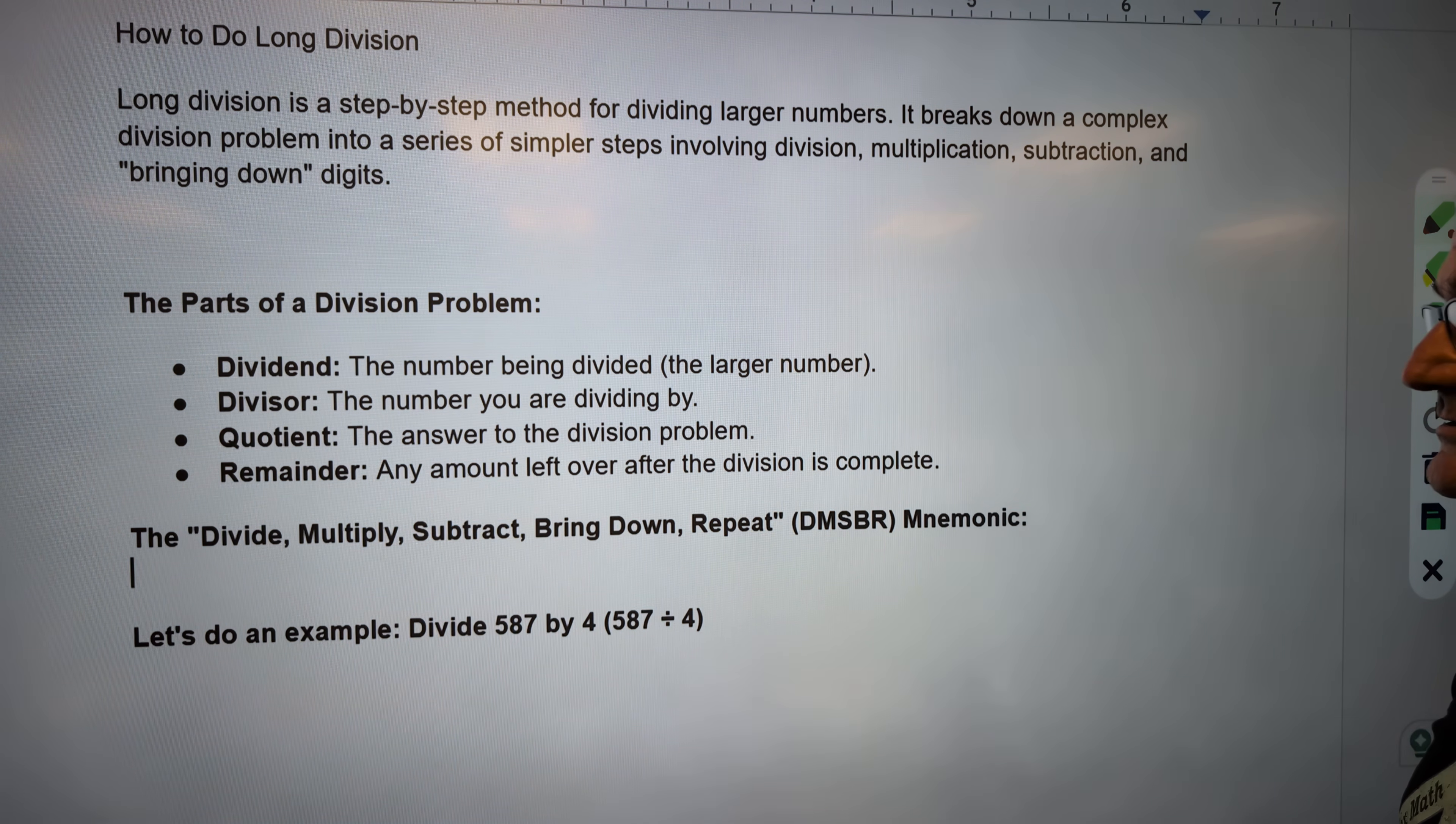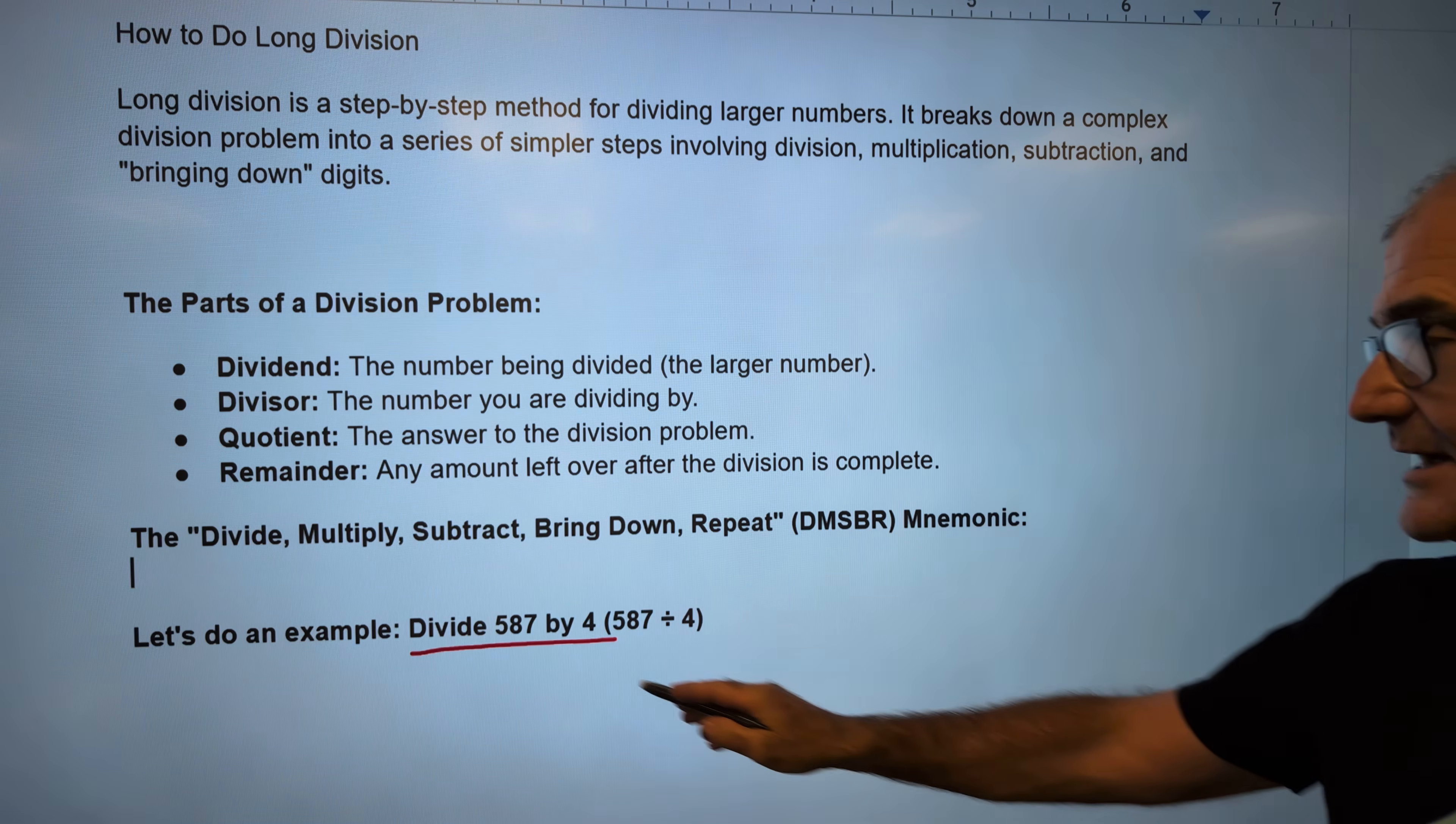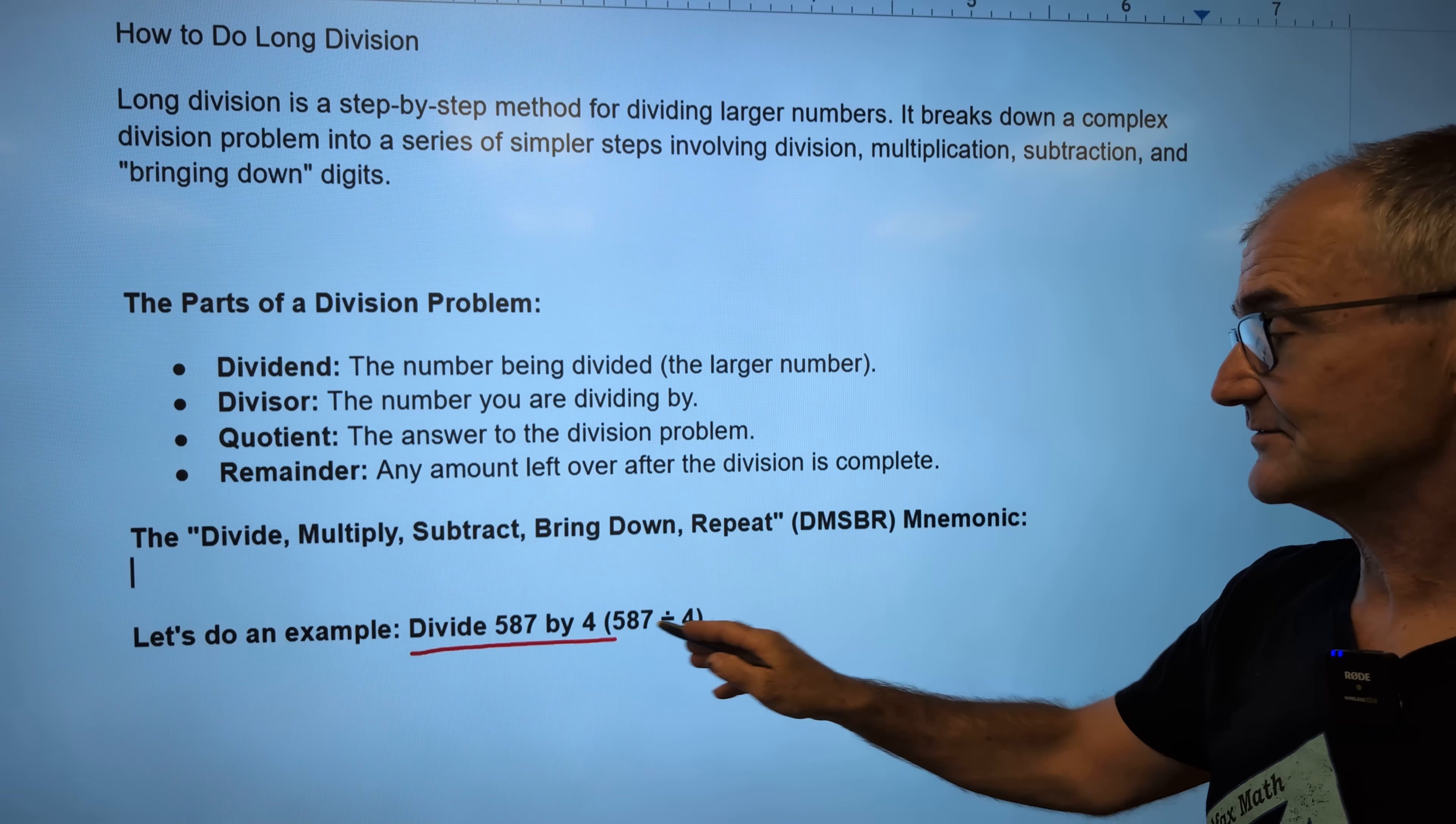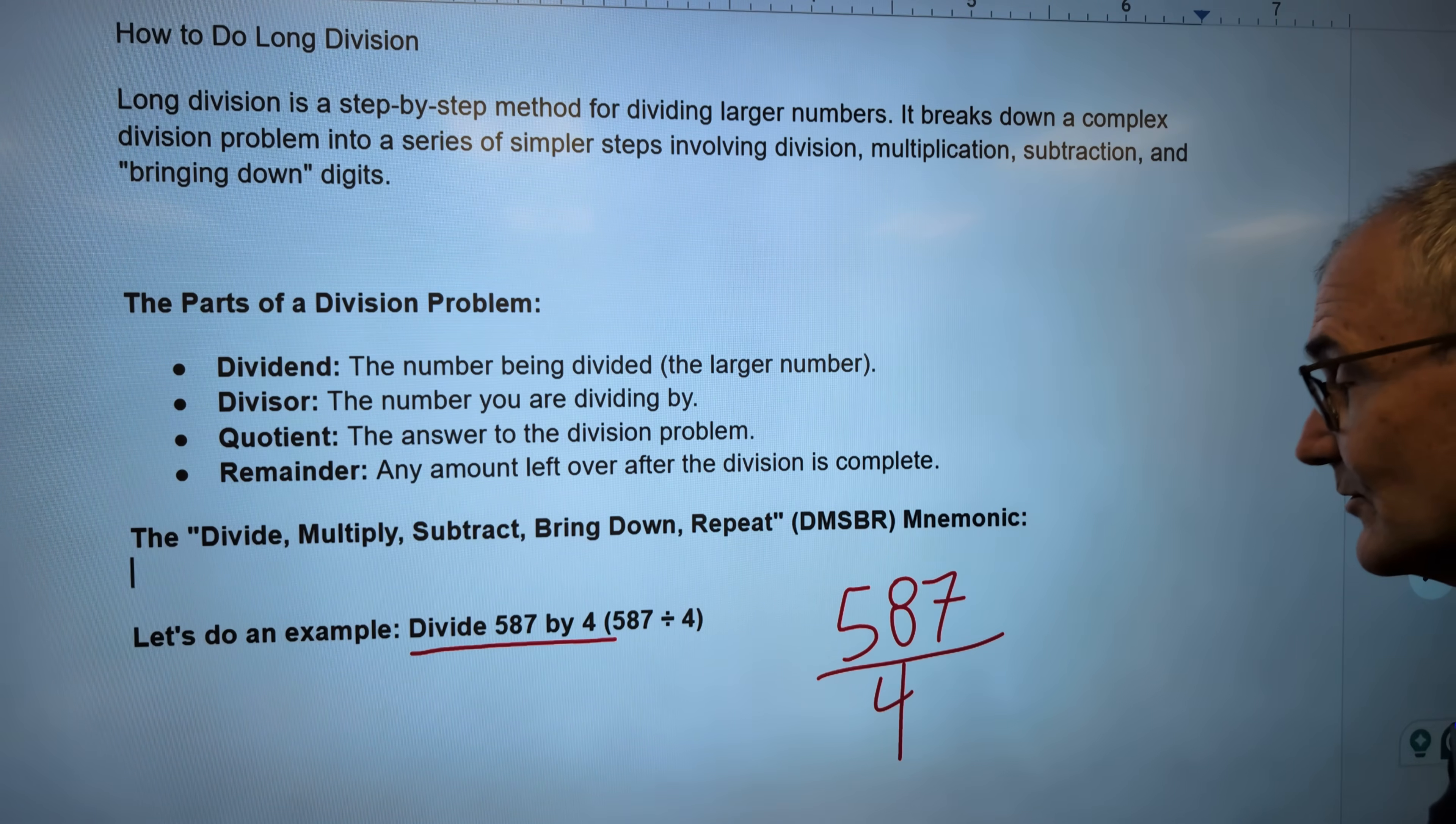There's a couple ways to write it. Let's say I have 587 divided by 4. I could write it like this: divide 587 by 4. I could write it like this: 587 divided by 4. I could write it like this: 587 divided by 4.